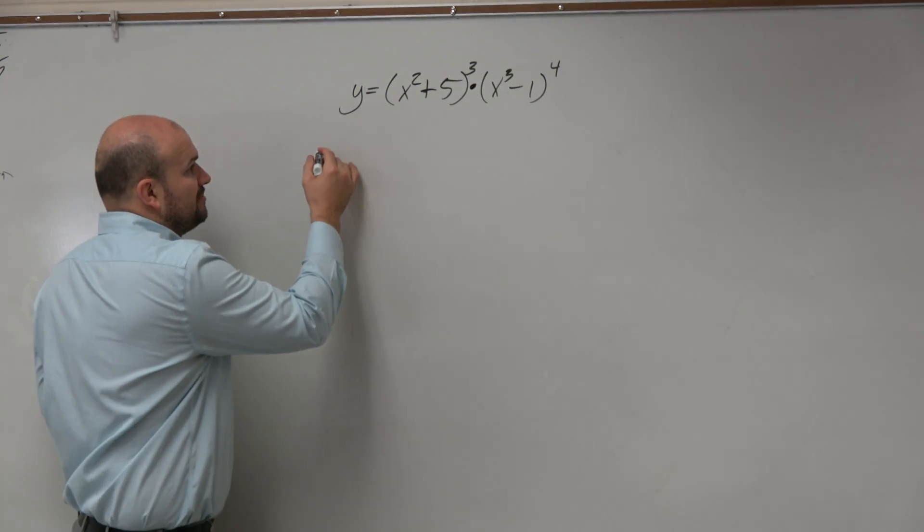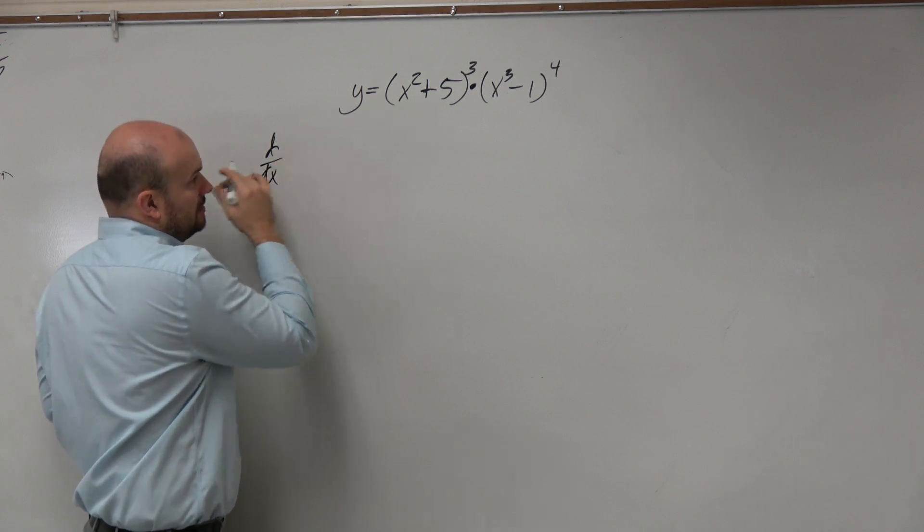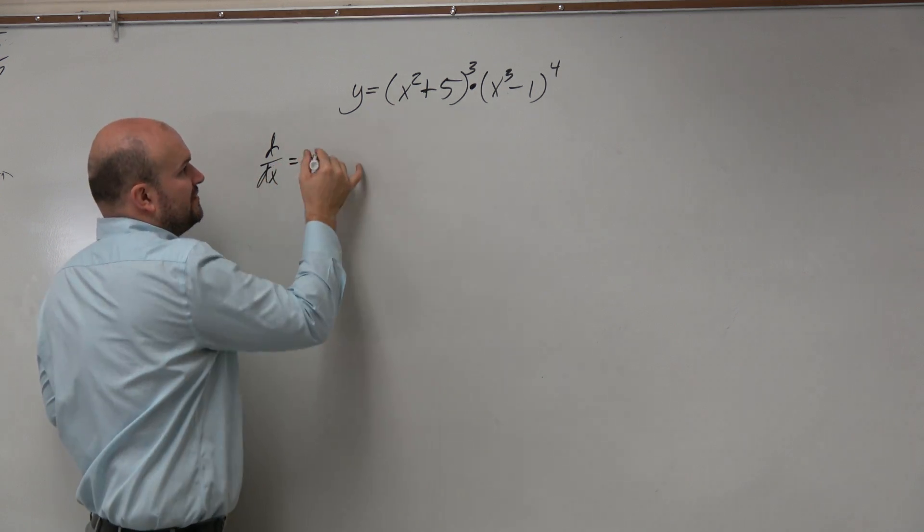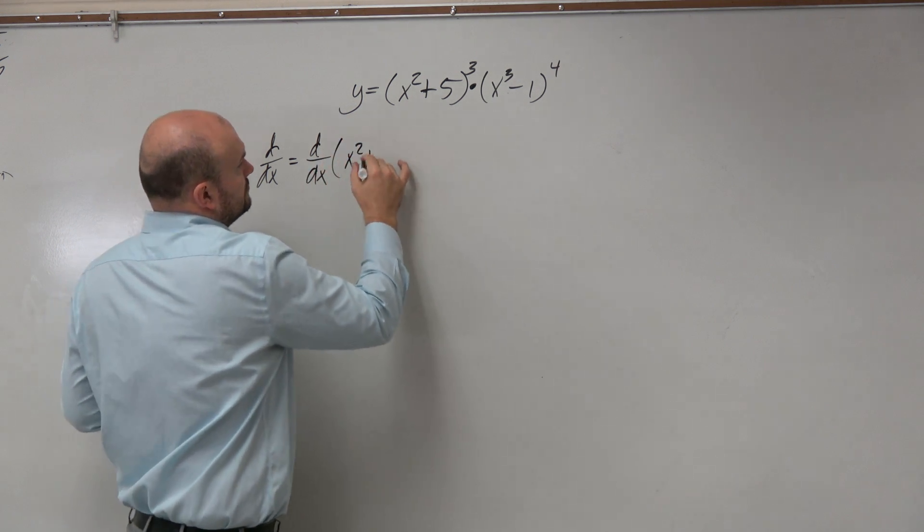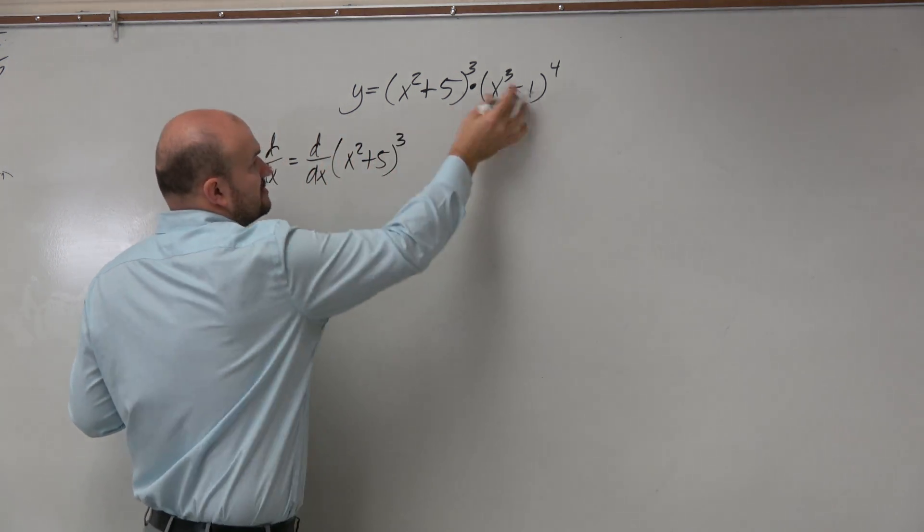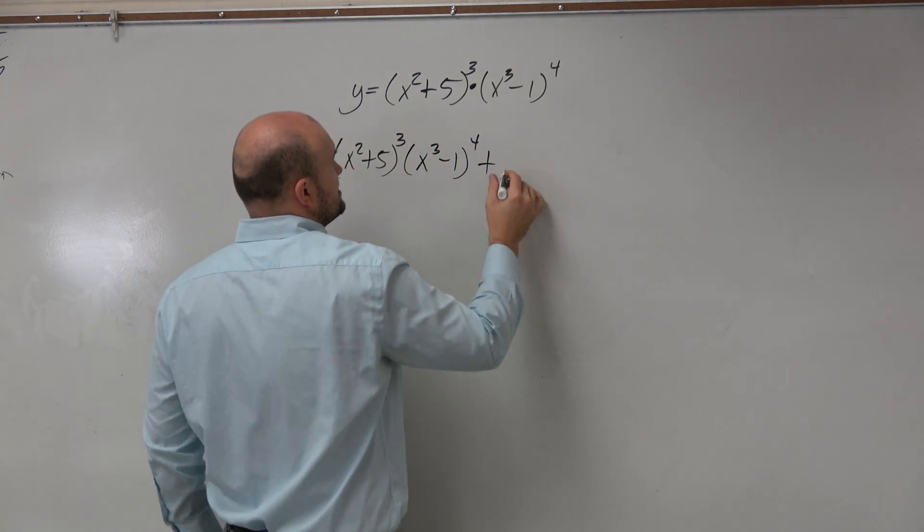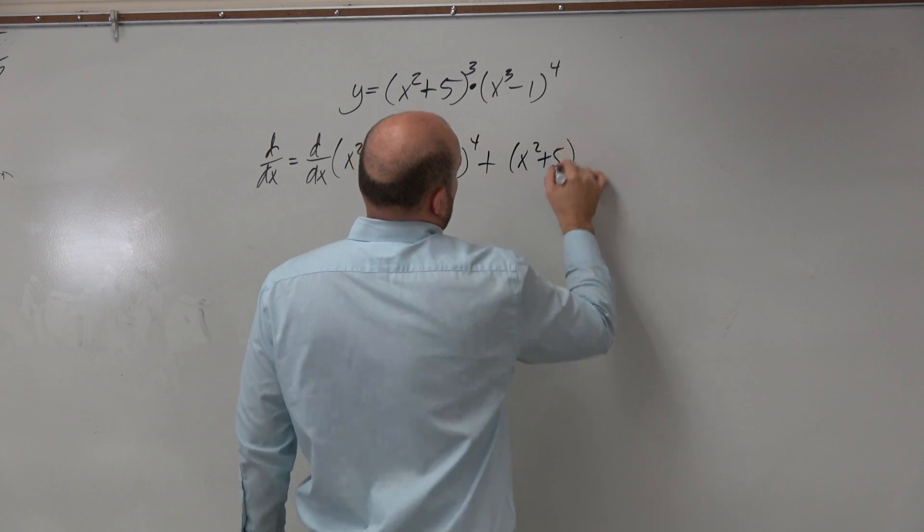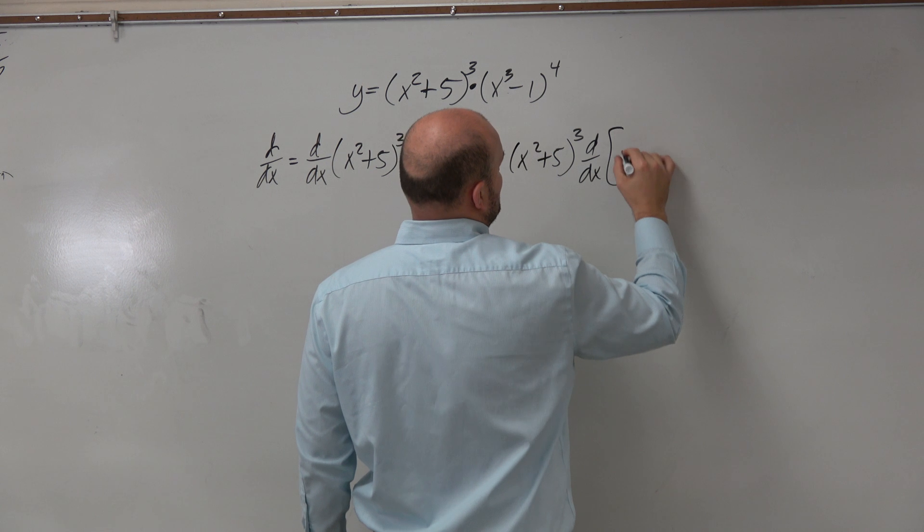So if I'm going to be applying the product rule, that means I'm going to take the derivative of my first function times my second function plus my first function times the derivative of my second function.